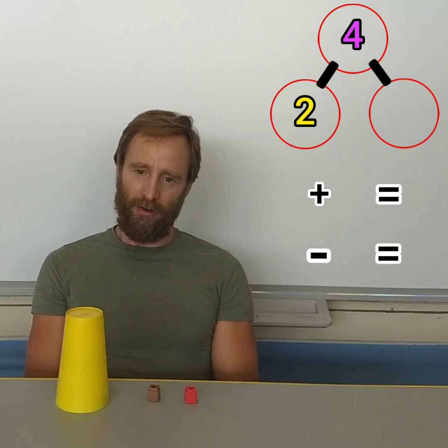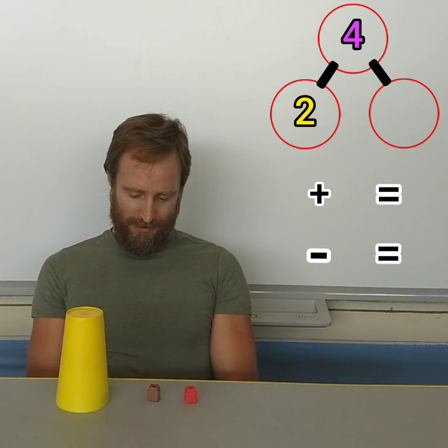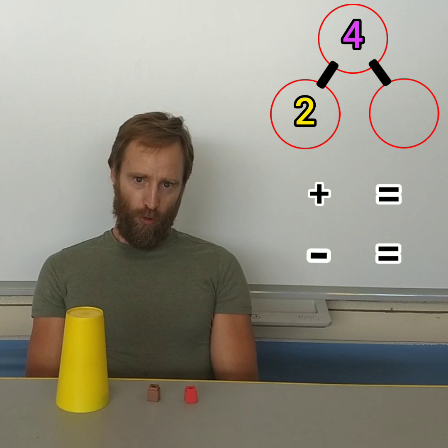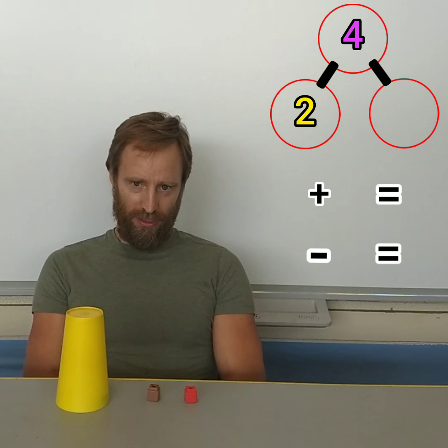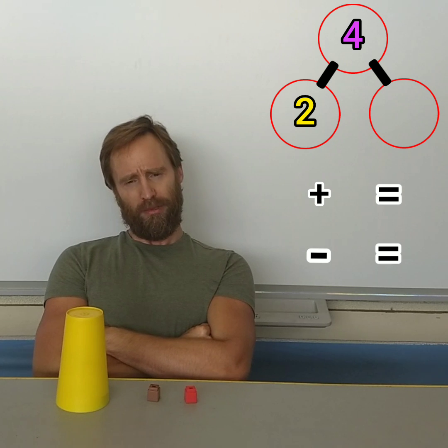Let's put that in our number bond. You can also call that a fact family. There were four. Now I only see two. How are you gonna figure that out? How many are under the cup? Well, we could do it the subtraction way first.